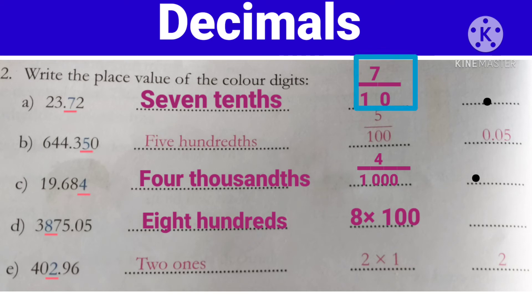Now next — see here. First one: 7 by 10. Isko hum decimal mein kis tarah se likhenge? Yahaan dekhiye — numerator aur denominator. Numerator mein se ek number hai. Toh hum denominator mein se bhi ek number cancel kar denge — 1 ko cancel karenge. Toh humare paas denominator mein kitnay zeros bache hain? 1 zero. Toh woh 1, 0 ko hum numerator ke 7 ke saath likhenge — yani 0.7. Hamisha yaad rakhiye: 0 point ke baad hi aayega.